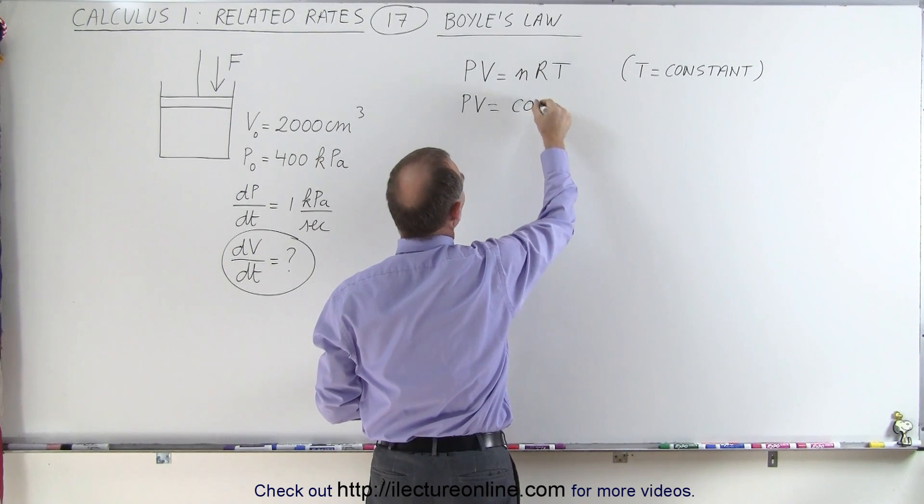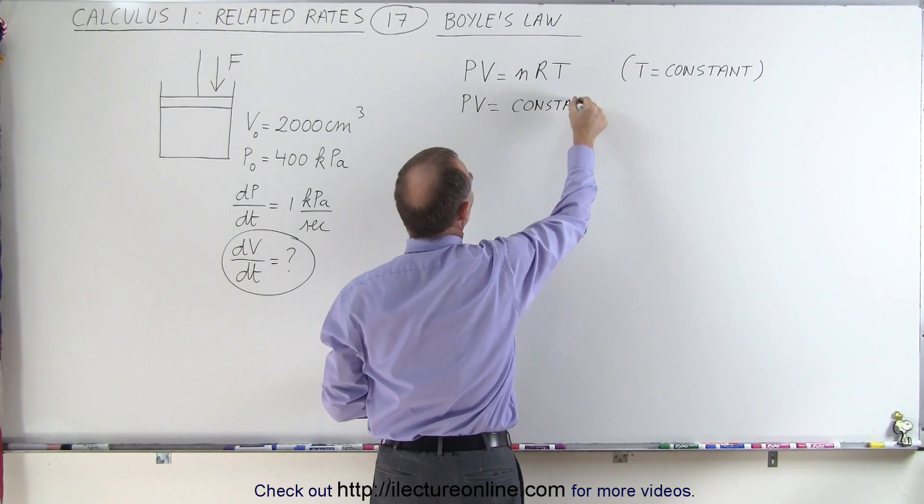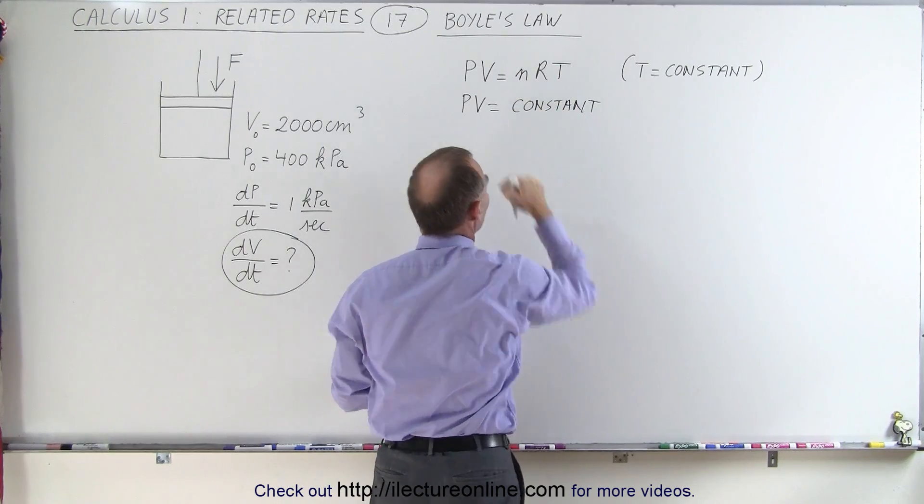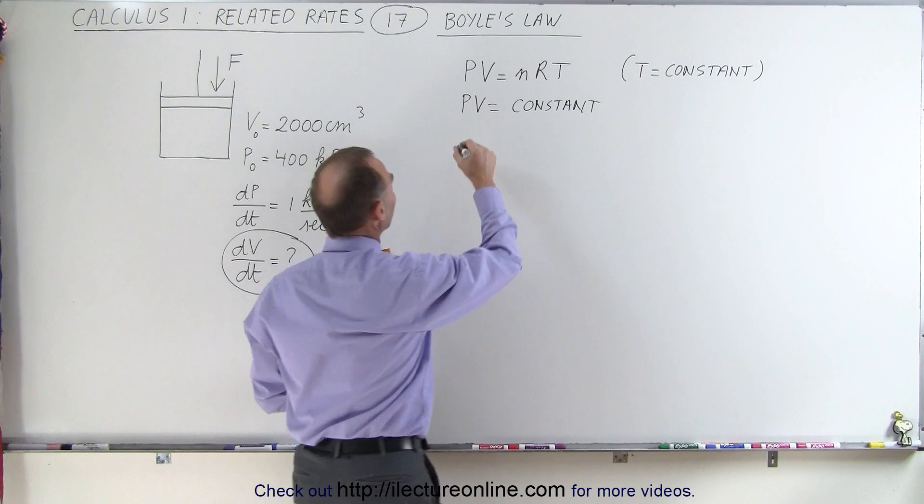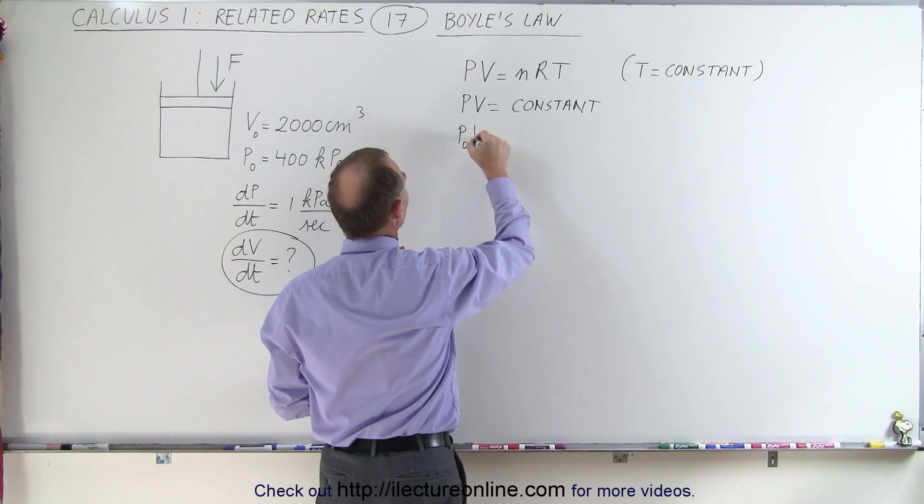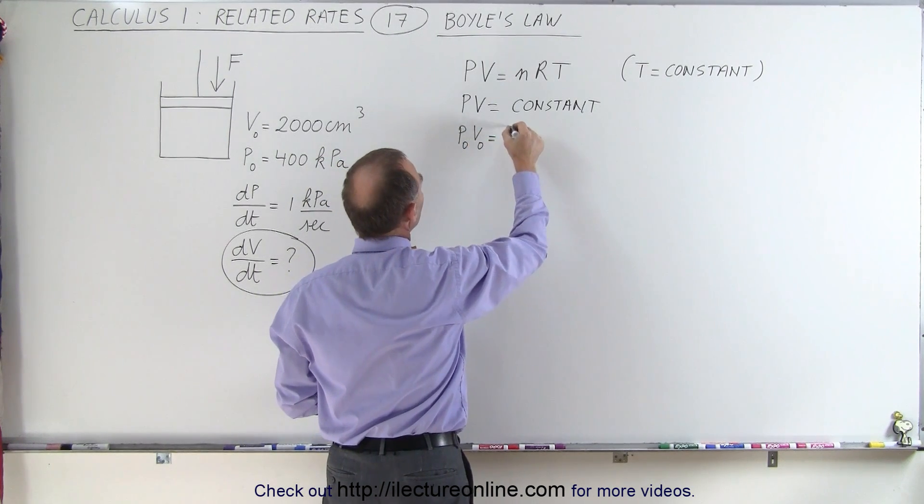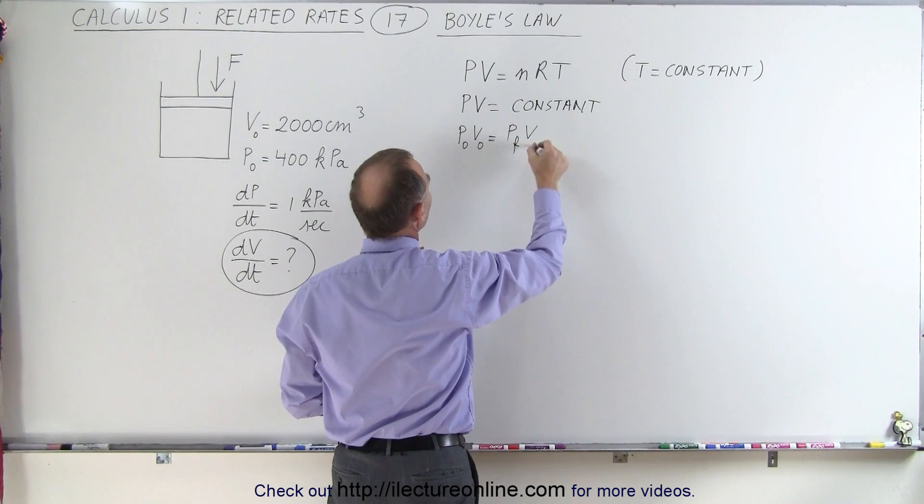So we know that PV is going to be equal to a constant. The product of the pressure times the volume in the gas will be constant under Boyle's Law, which means that P initial times V initial is going to be equal to P final times V final.